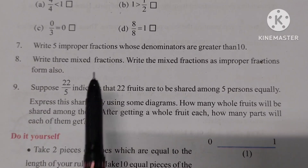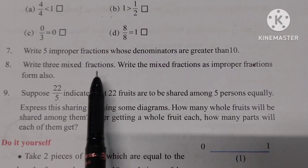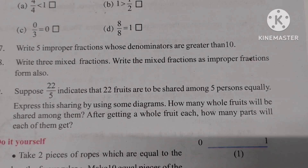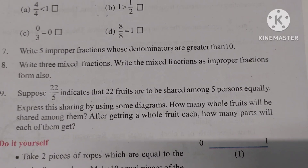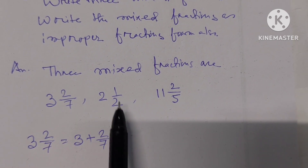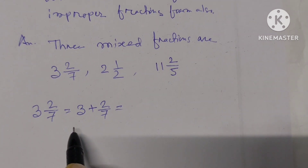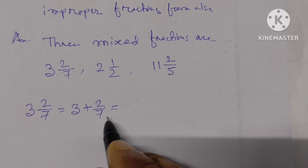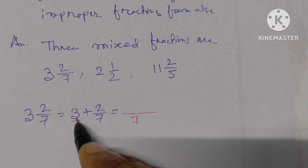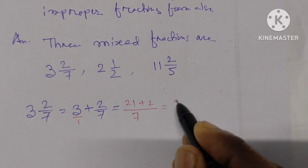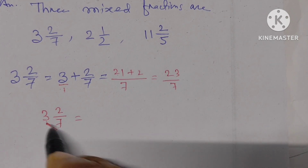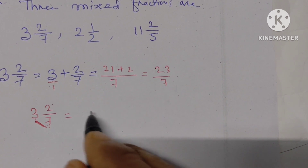Number 8: Write 3 mixed fractions as improper fractions. The mixed fractions are: 3 and 2 by 7, 2 and 1 by 2, and 11 and 2 by 5. For the first one, 3 and 2 by 7: multiply 3 by 7 to get 21, then add 2 to get 23. So 3 and 2 by 7 equals 23 by 7.